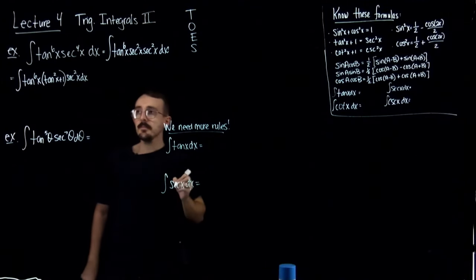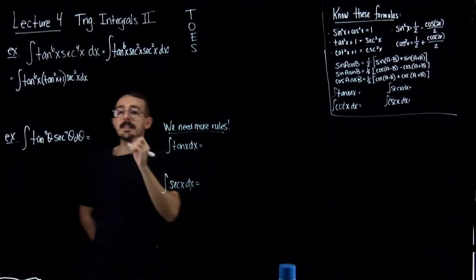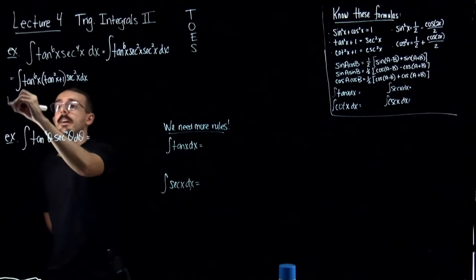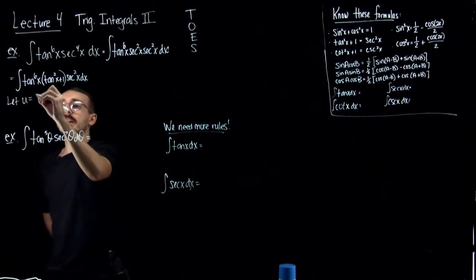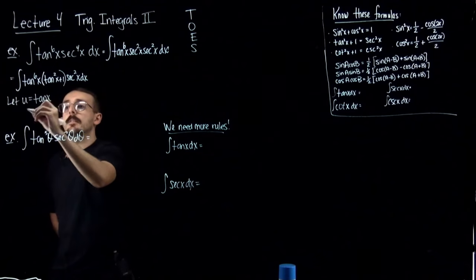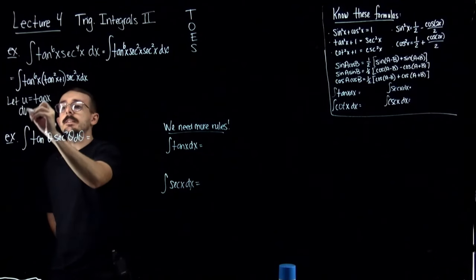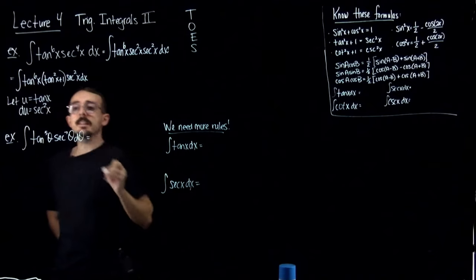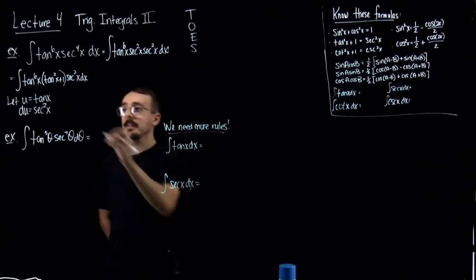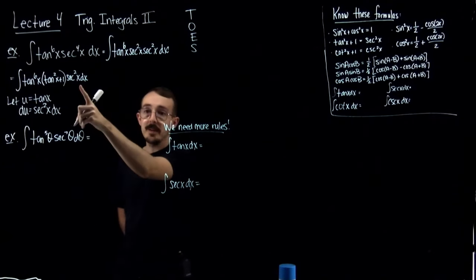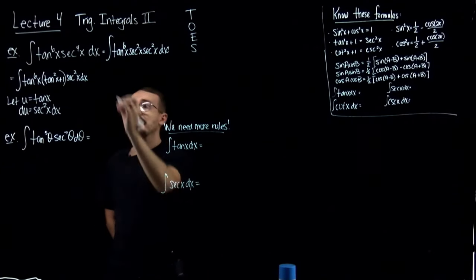I'm going to leave the other secant squared alone, because I see something I want. If I make a u-substitution and let u be tangent of x, then du equals secant squared dx, which is right there — and I'm going to be able to get rid of that.